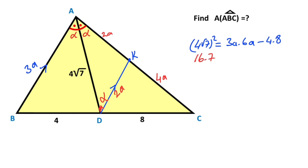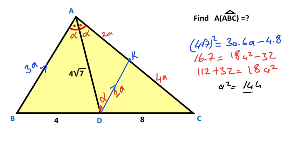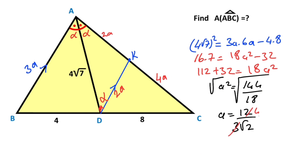Therefore 16 times 7 equals 18a² minus 32. So 112 plus 32 equals 18a², which means a² equals 144 over 18. Taking the square root of both sides, a equals 12 over 3√2, which simplifies to a = 2√2.